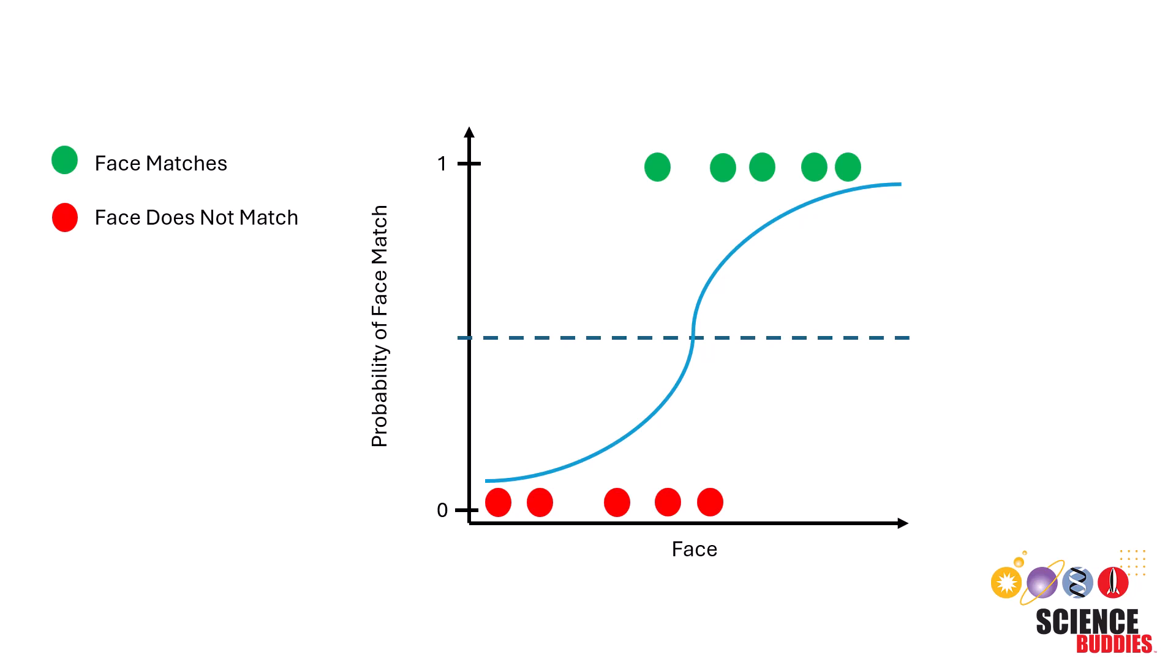If you want to make the model more picky, you can increase the threshold. It reduces the chance of false positives, but it might miss some cases.